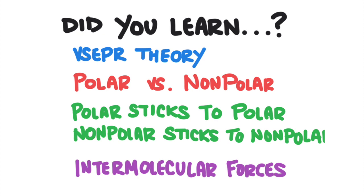So did you learn everything in this lesson? If you did, you learned that molecules take on an ordered three-dimensional shape according to VSEPR theory. Covalent bonds can be polar or nonpolar. Molecules that are not symmetrical and have polar bonds are generally polar molecules. Molecules stick together according to their polarity — nonpolar molecules stick with other nonpolar molecules, and polar molecules stick with other polar molecules. Intermolecular forces hold molecules together: London dispersion forces are the weakest, dipole forces are stronger, and hydrogen bonding represents the strongest intermolecular force.